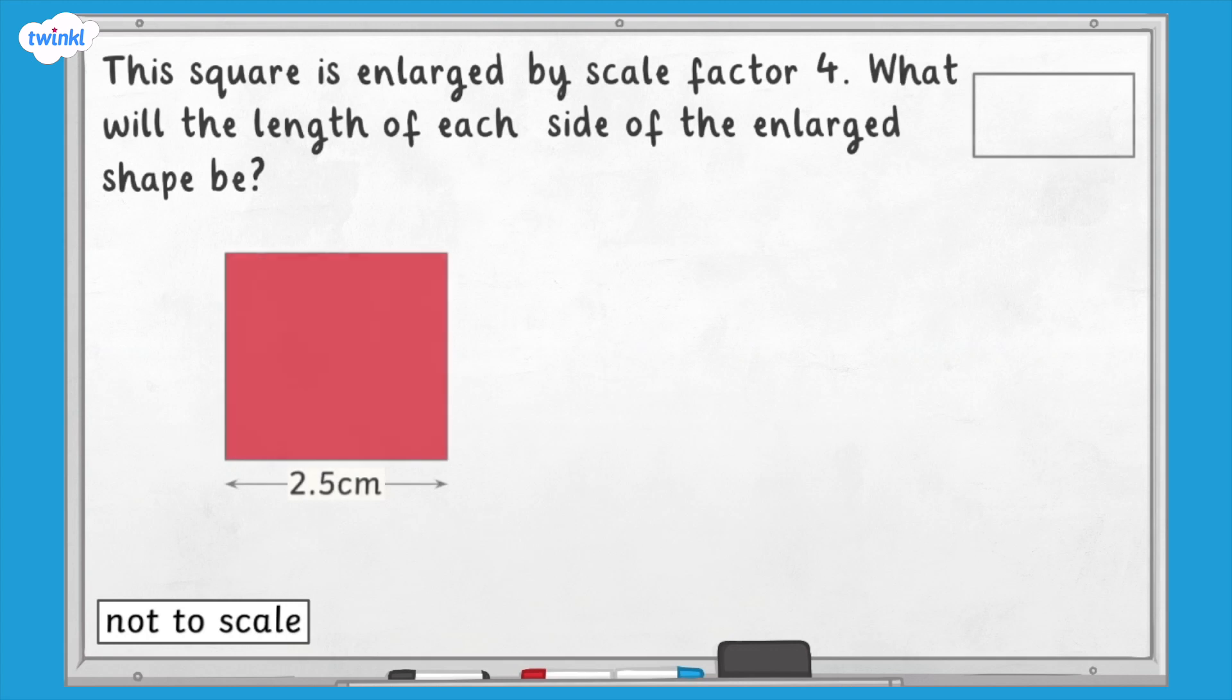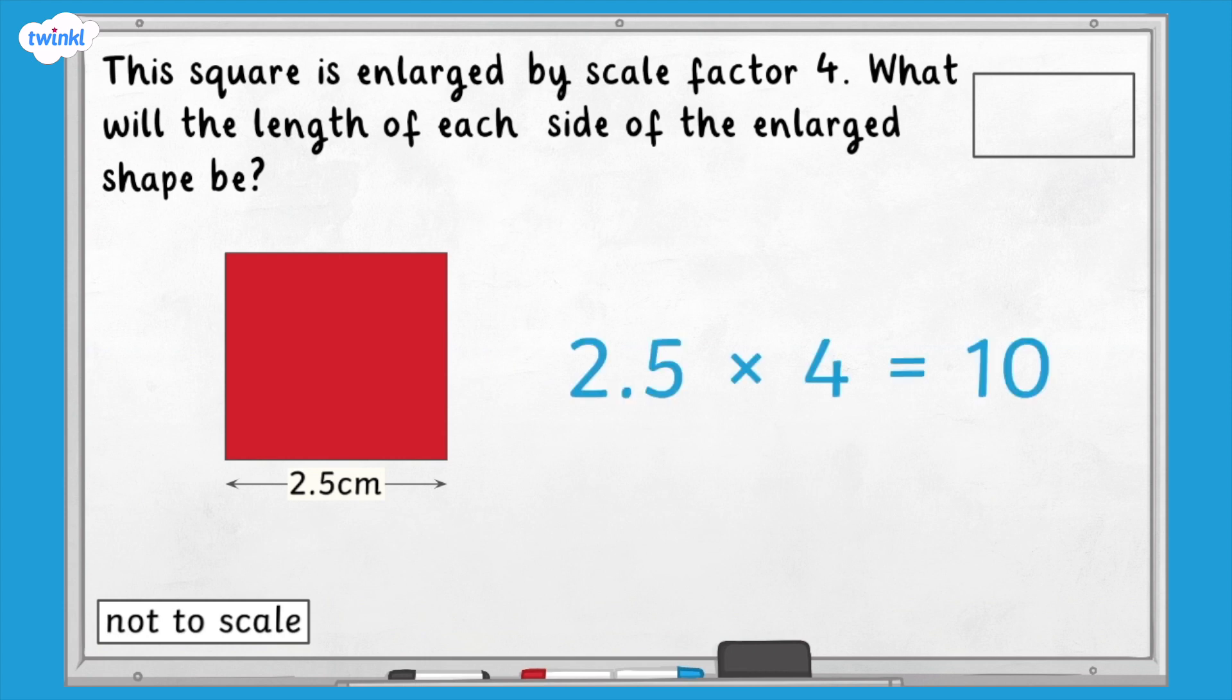This square is enlarged by scale factor 4. What will the length of each side of the enlarged shape be? Because this is a square, we know that all the sides are the same length of 2.5 centimeters. If the scale factor of enlargement is 4, the enlarged shape is 4 times bigger. 2.5 times 4 equals 10, so the enlarged shape will have sides that measure 10 centimeters.